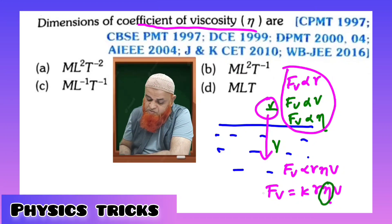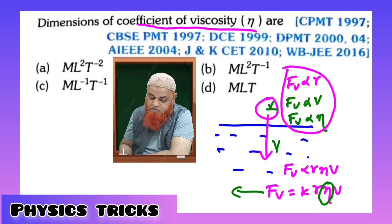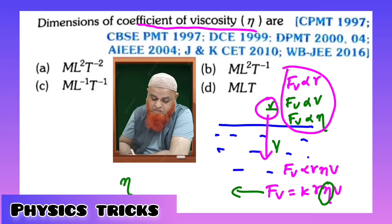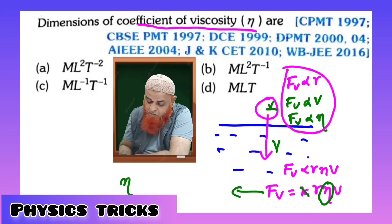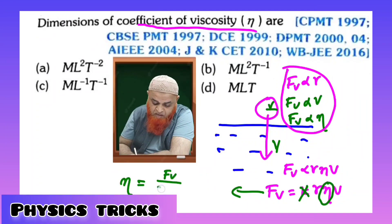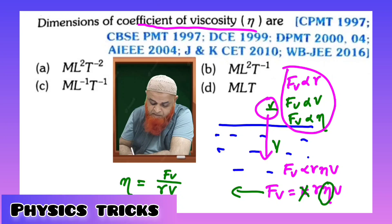Which is our requirement. So if you want to find out the dimensional formula for coefficient of viscosity, it is very simple. You all know constants do not have any dimensions, so remove this part. Then you will write viscous force divided by R into V velocity.